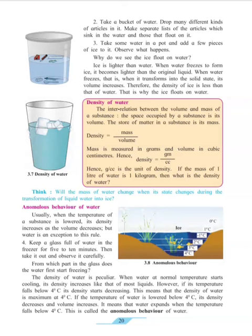The density of water is peculiar. When water at normal temperature starts cooling, its density increases like that of most liquids. However, if its temperature falls below 4 degrees Celsius, its density starts decreasing. This means that the density of water is maximum at 4 degrees Celsius. If the temperature of water is lowered below 4 degrees Celsius, its density decreases and volume increases. It means that water expands when the temperature falls below 4 degrees Celsius. This is called the anomalous behavior of water.